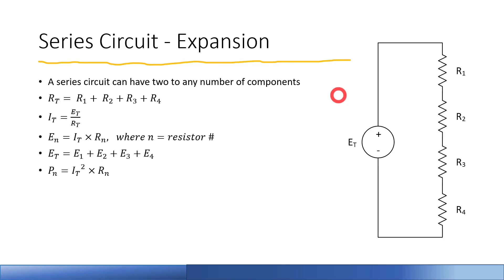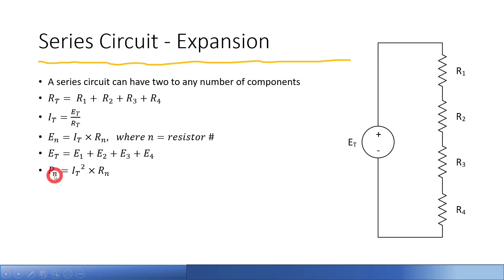Power is easily calculated using the common current in a series circuit. All series circuits have one common current that travels through each and every component, which is why we use I total. We substitute the resistance value — so if we're talking about resistor three, we use R3 to find the power dissipated. Power is also additive; adding resistors adds to the power consumption of the circuit.